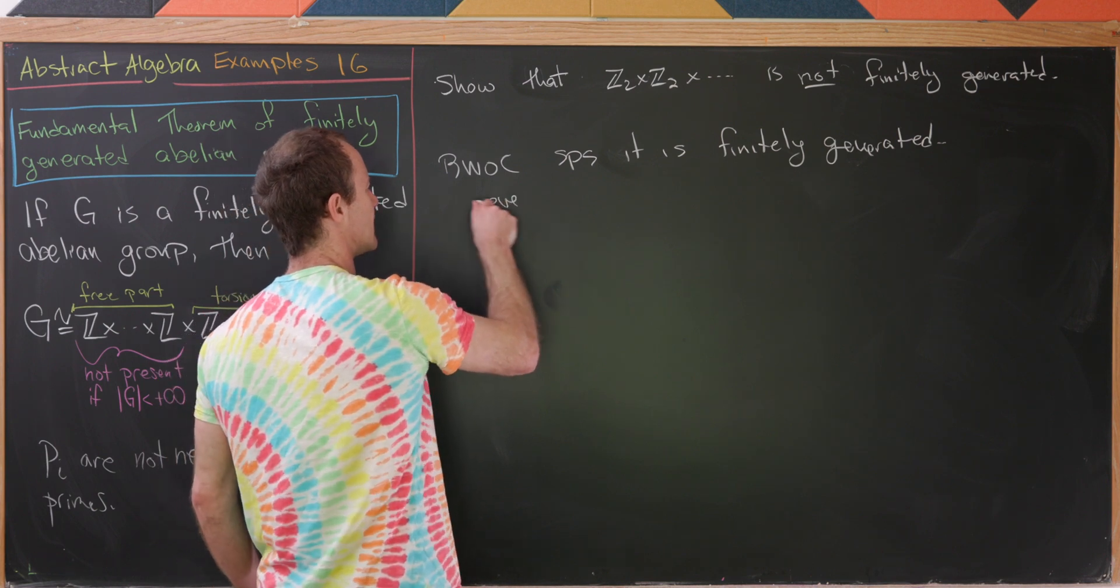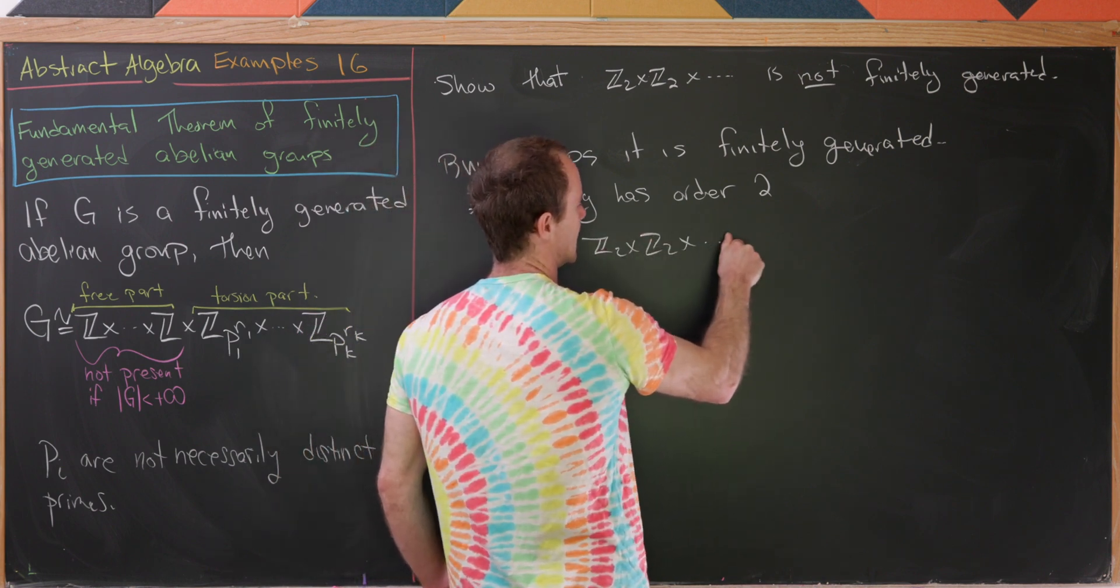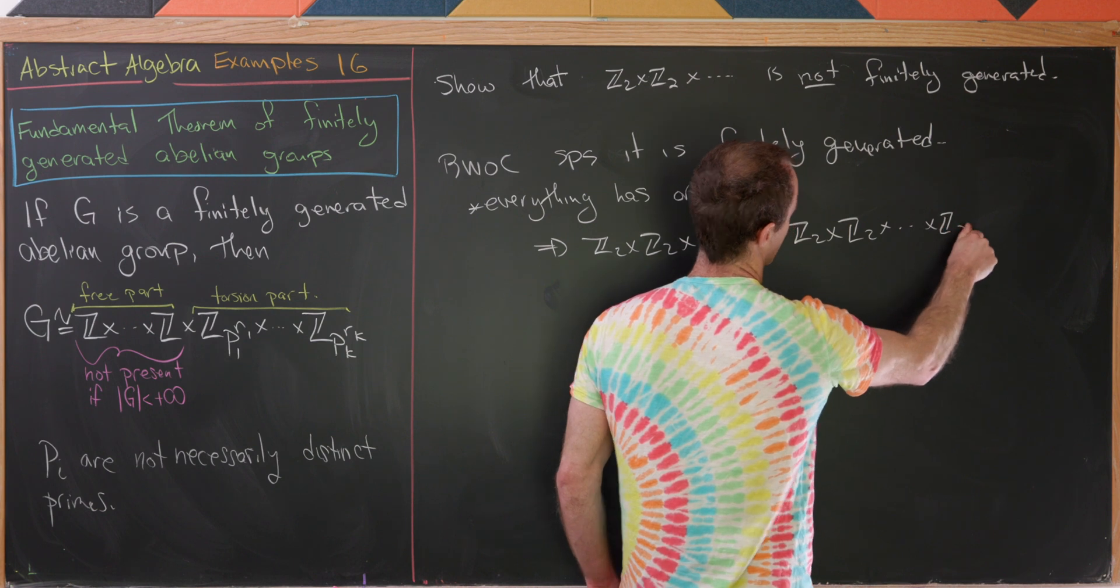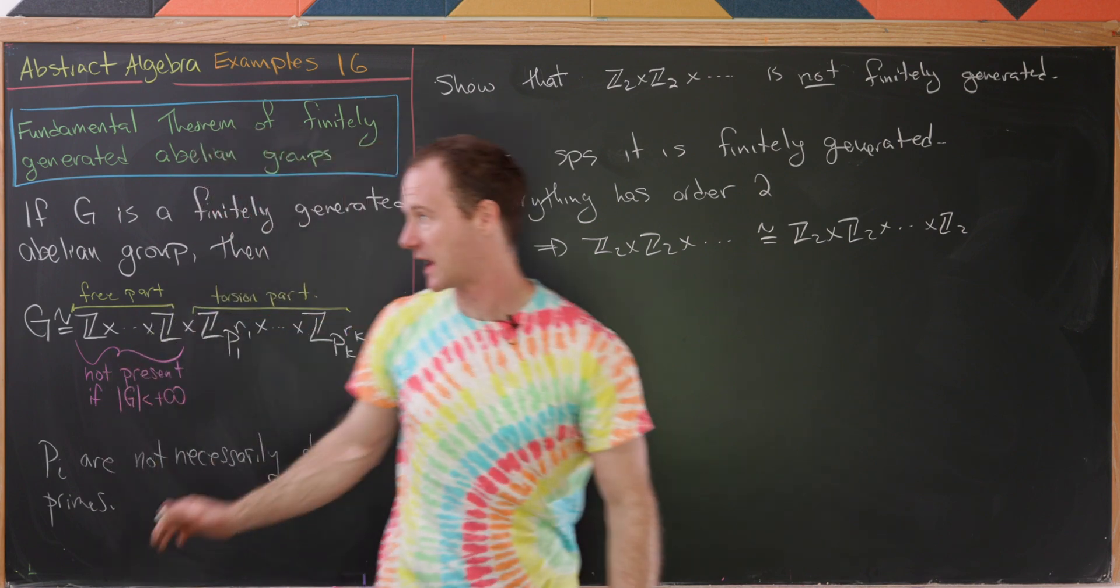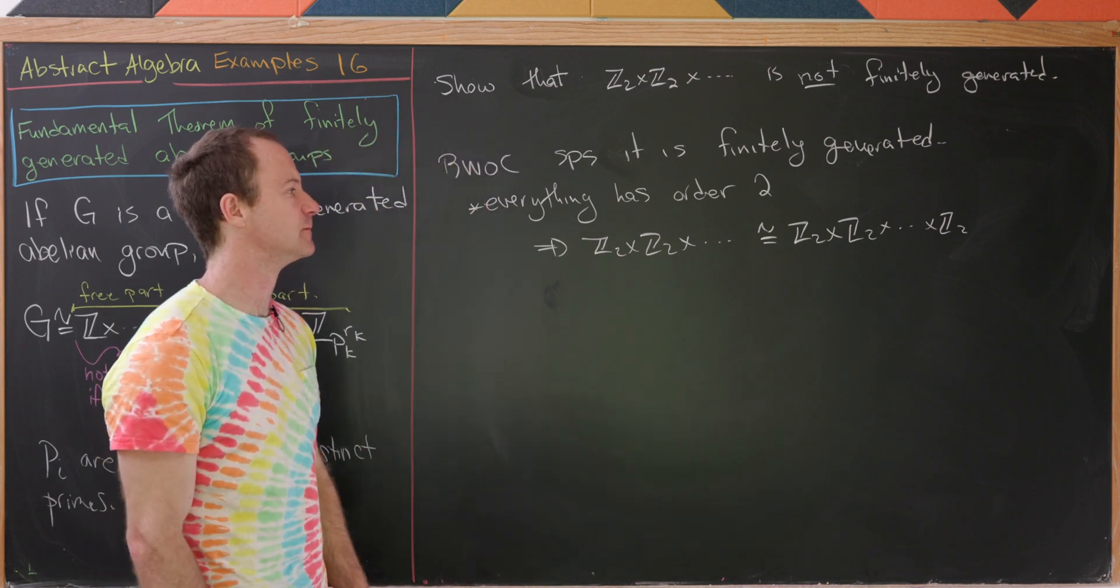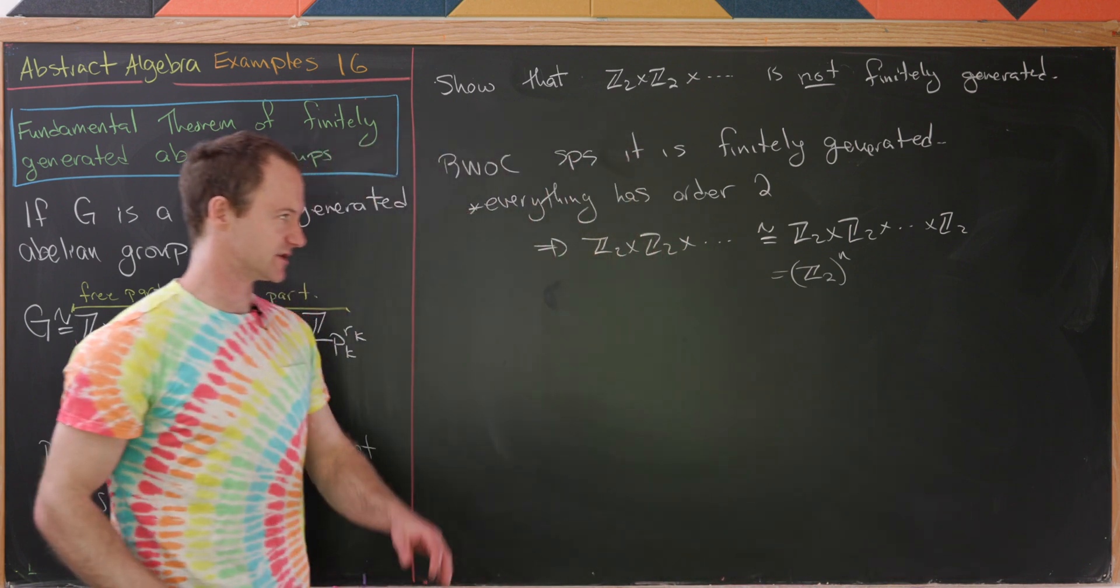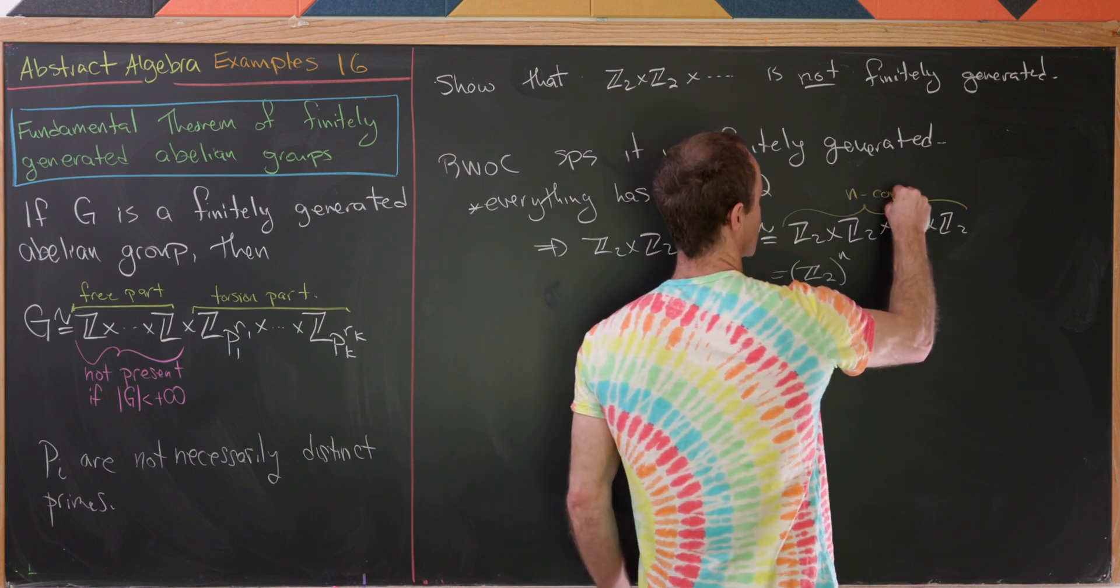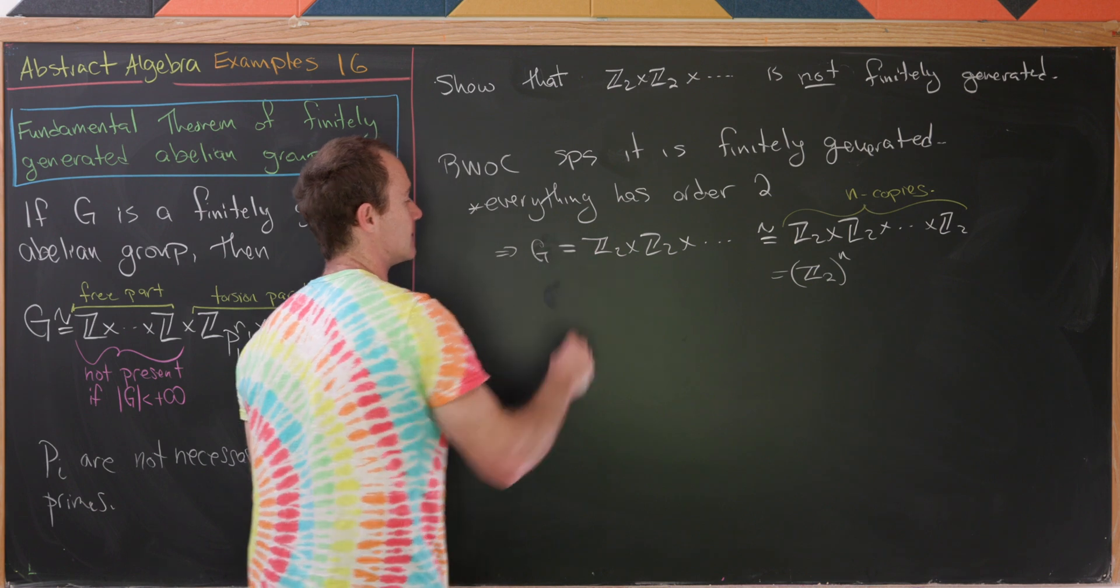But note that everything has order 2, which implies that Z2 cross Z2, an infinite product, is in fact isomorphic to Z2 cross Z2, a finite product. Because if something's finitely generated and everything has order 2 by our theorem over here, then everything has to come from a copy of Z2 cross Z2. But now let's write this maybe as Z2 upper N. So that would be N copies of Z2. And let's point out here that we have N copies of Z2. And let's also introduce some notation where we call our original group G.